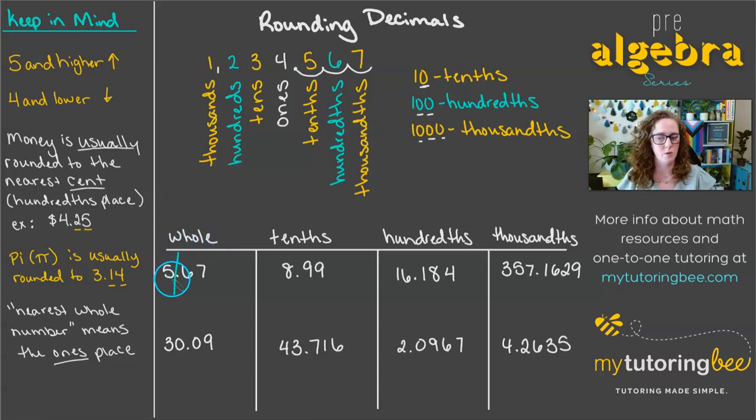Five is in the whole number position in the ones place, so I'm going to put a slash there, and that kind of tells me that we are eventually going to cut the rest of this number off, but I need to use this next number after the slash to inform me what to do with that five. So if this number after the slash is five or higher, then we are going to round up to the next number. So when we are rounding to the nearest whole number,